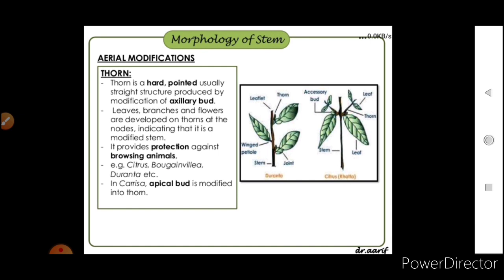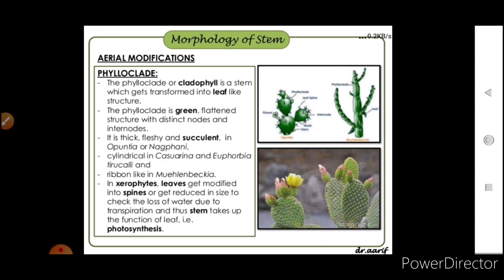A thorn is a hard, pointed, usually straight structure produced by modification of the axillary bud. Leaves, branches, and flowers can develop on thorns at the nodes, indicating it is a modified stem. Thorns provide protection against browsing animals. Examples are Citrus, Bougainvillea, and Duranta. In Carissa, the apical bud is modified into a thorn.